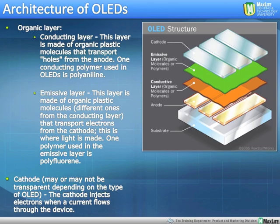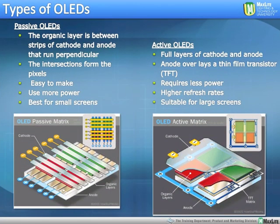There are two distinct types of organic LEDs: the passive matrix and the active matrix, also known as AMOLEDs. In passive matrix OLEDs, the organic layer is between strips of cathode and anode that run perpendicular to each other, as you can see in the graphic. The intersections form the pixels — every intersection is an individual pixel. They're easy to make. They use a little more power than the AMOLEDs, but they're best for small screens.